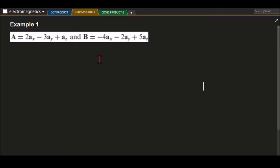In this video, we will be solving an example on the cross product of two vectors. We have here the two vectors. For vector A, we have 2ex minus 3ay plus az.